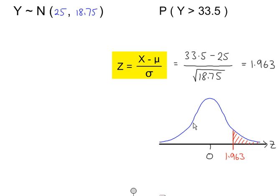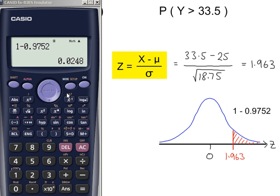Because less than half of this sketch has been shaded, we need to do 1 minus the probability that we've just looked up, to give 0.0248.